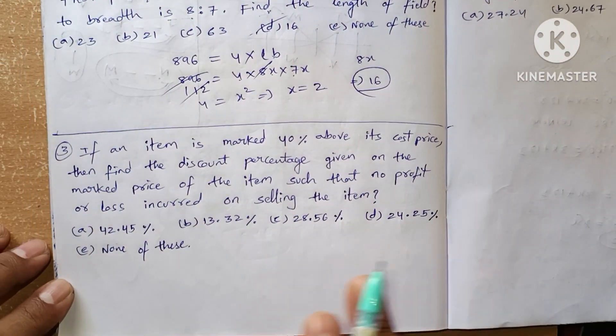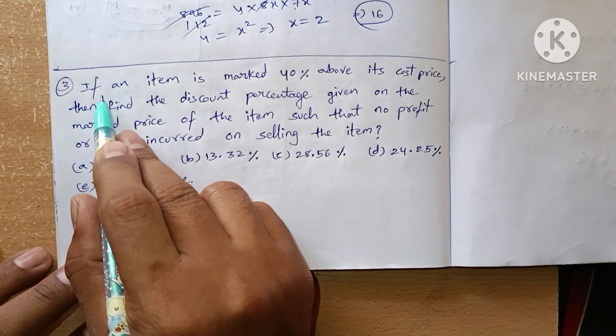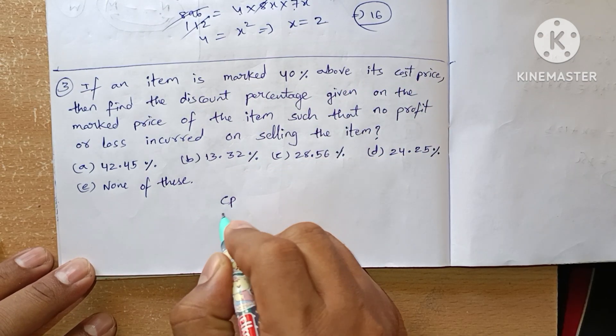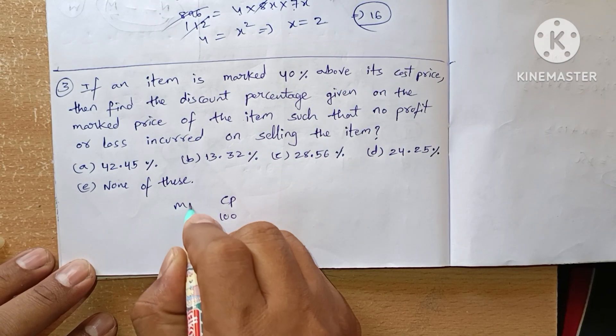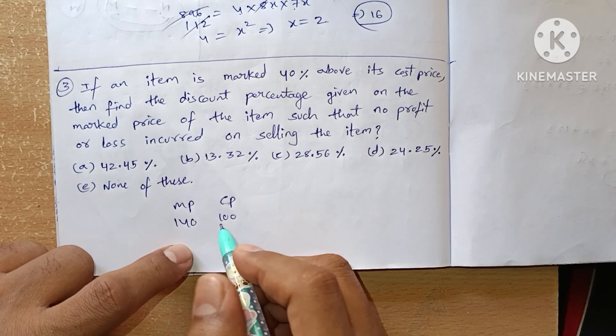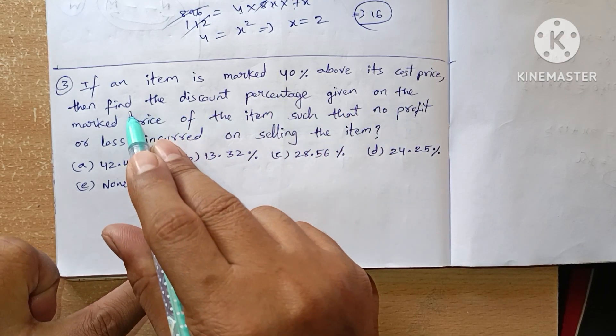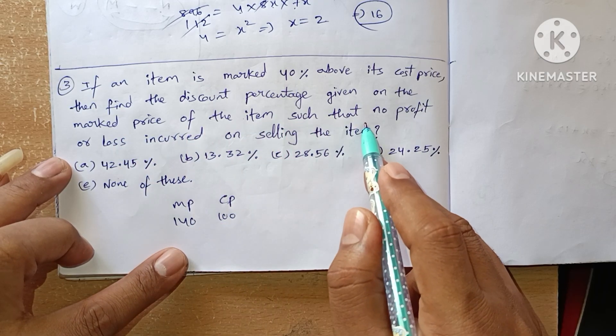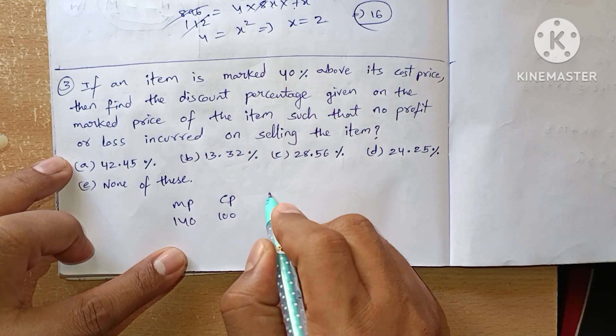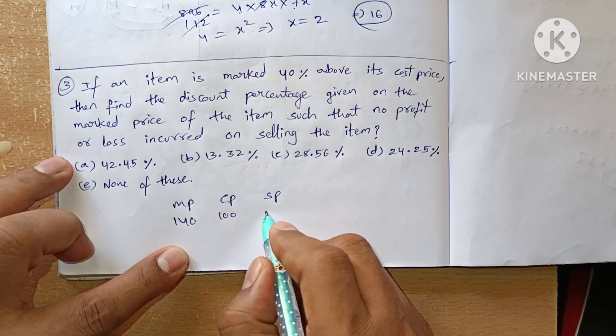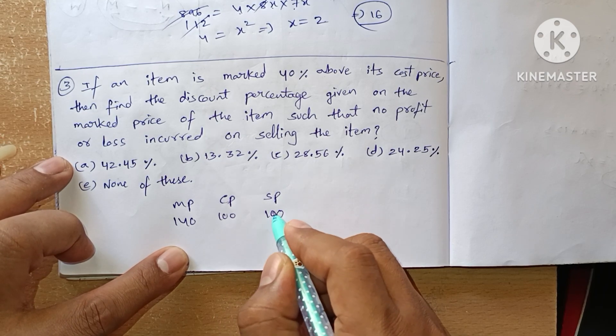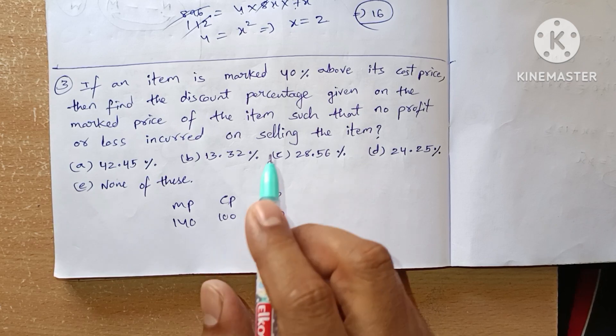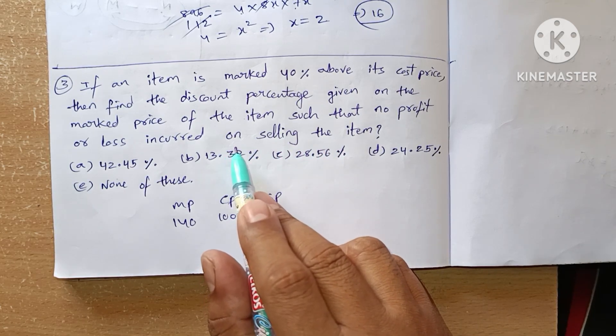Now we are going to see question number three. If an item is marked 40 percent above cost price, let cost price be 100 and market price be 140 because it's increased by 40 percent. Find the discount percentage given on the market price such that no profit or loss is incurred. No profit or loss means he sold it at 100.